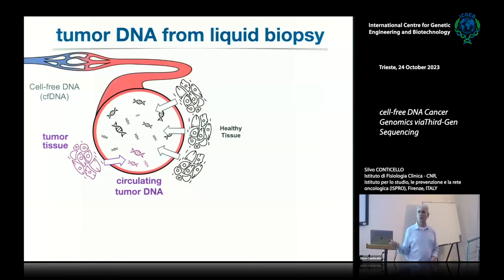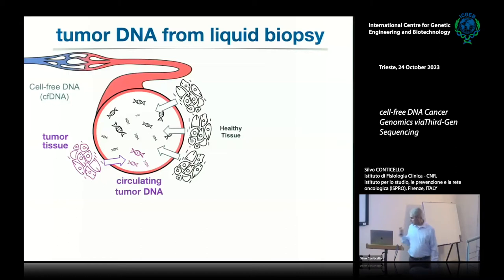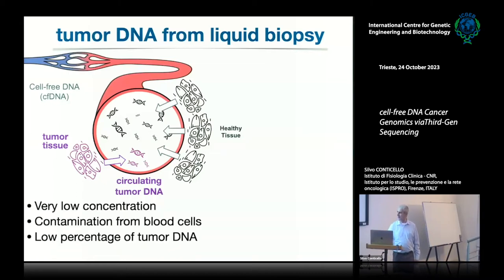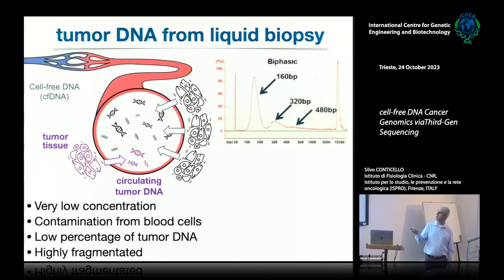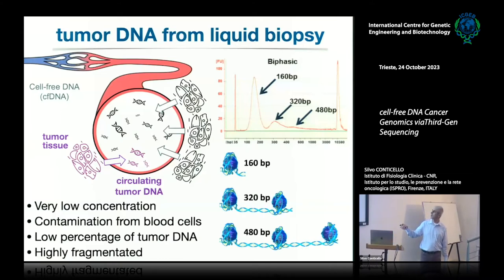DNA is released by dying cells — usually healthy tissue releases most of it, and of course most comes from blood cells: lymphocytes, macrophages, neutrophils, and so on. But in the case of tumors, a tumor will grow, divide very fast, die very fast, and will release plenty of DNA into the bloodstream. The main problem is that tumor DNA is only a fraction of all the DNA present in the bloodstream — the cell-free DNA.